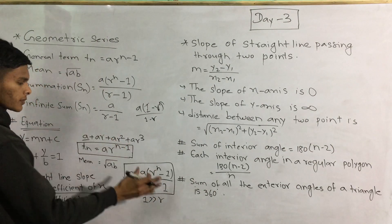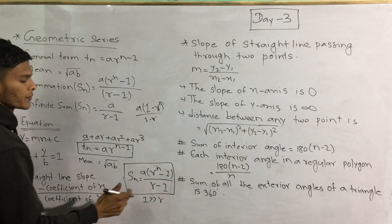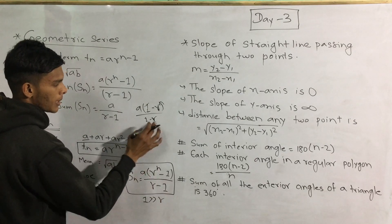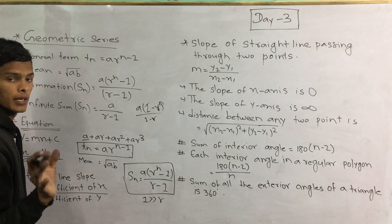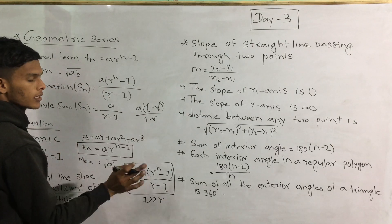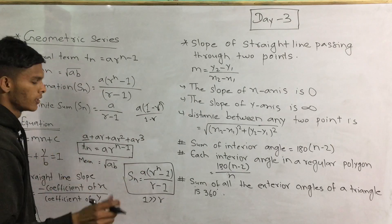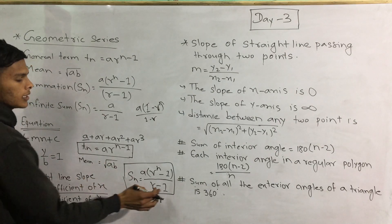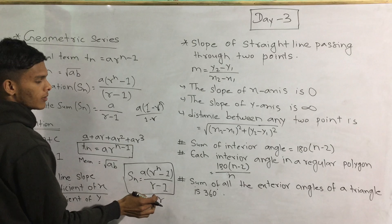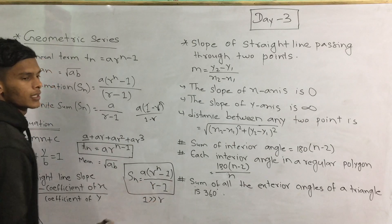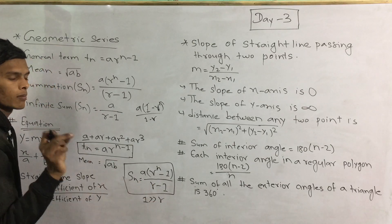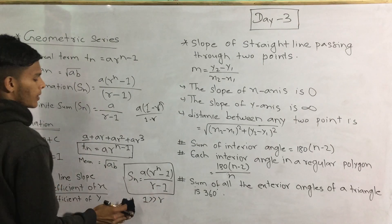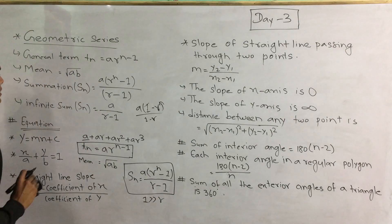This will be a simple problem. If we have 1 minus r, we will get a simple problem. You will see this problem. So if we look at r, we will have 1 minus r.